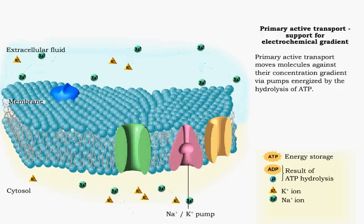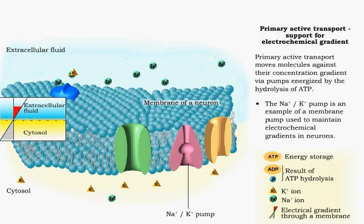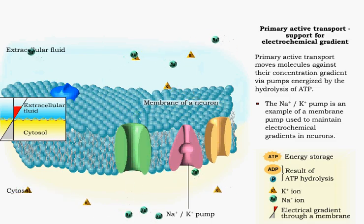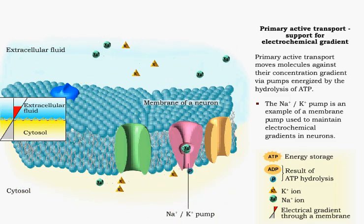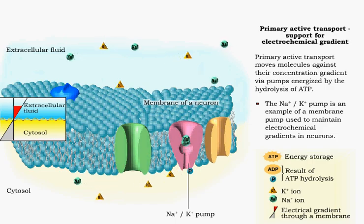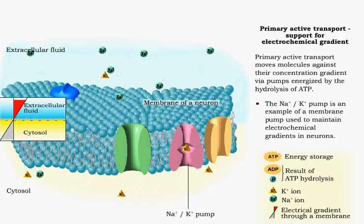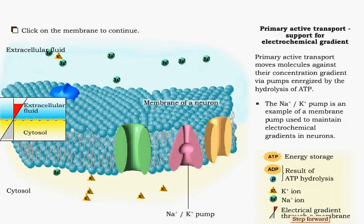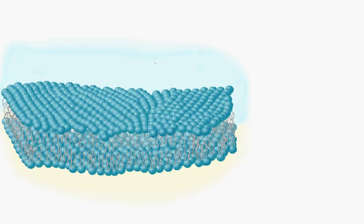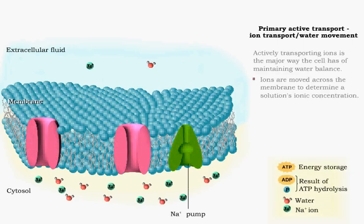The sodium-potassium pump is an example of a pump used to maintain electrochemical gradients in neurons. Actively transporting ions is the major way the cell has of maintaining water balance.